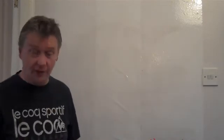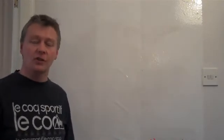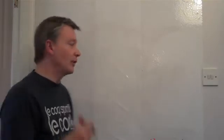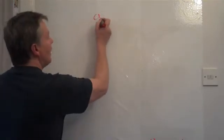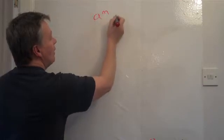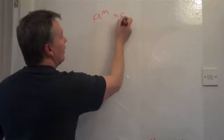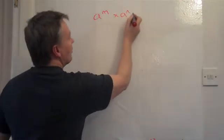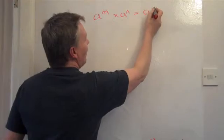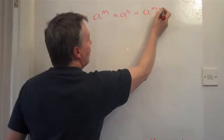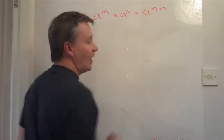We're going to be talking about the rules of indices, and there are two separate rules to cover today. The first one is where we say a to the power of m multiplied by a to the power of n equals a to the power of m plus n.